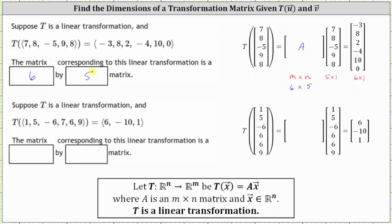For the second example, we have the transformation matrix times the input vector equals the output vector. The input vector is a six by one column matrix and the product is a three by one column matrix. The transformation matrix is an M by N matrix. In order for the multiplication to be defined, N must equal six, and because the product is a three by one matrix, M must equal three. The transformation matrix must be a three by six matrix.